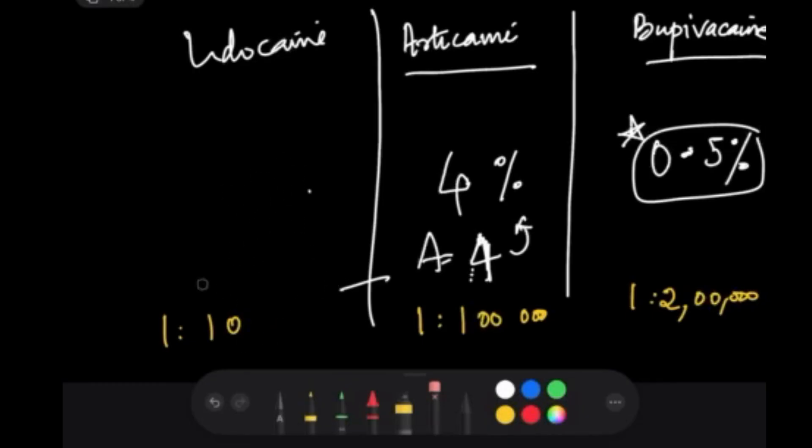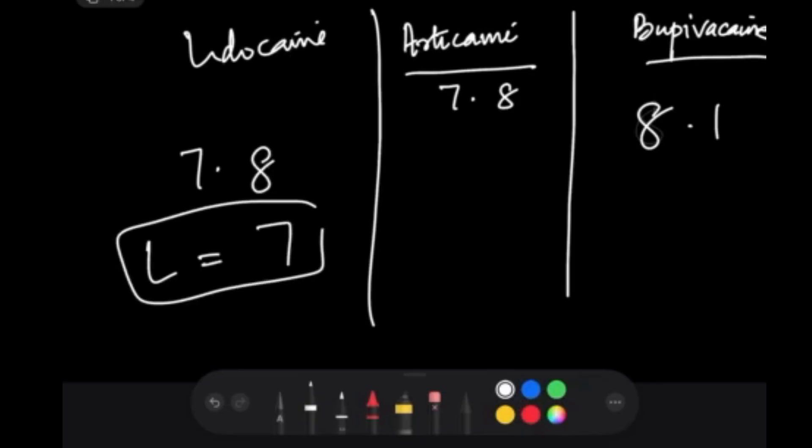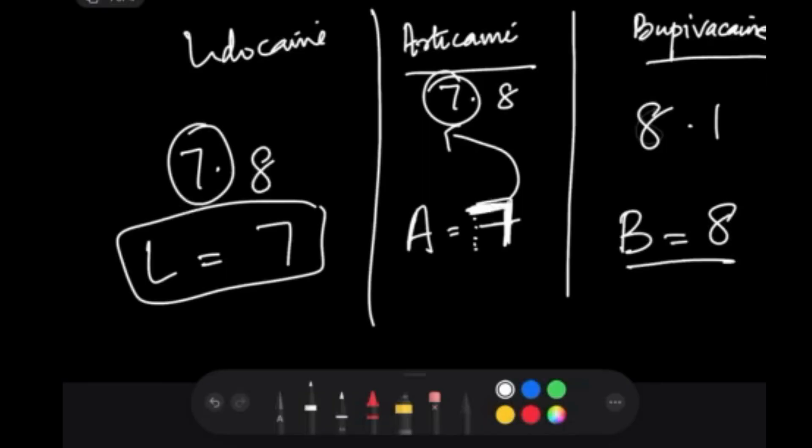Now let's look at the pKa. The pKa for lidocaine is 7.8, articaine is also 7.8, but bupivacaine is different at 8.1. How do you remember it? L, if you write it upside down, it's a 7, so that's an easy way to remember 7.8. For articaine, some people write the letter 7 like this, so you can make an A with that 7. But bupivacaine 8.1, B looks like the letter 8. These are the pKa values.